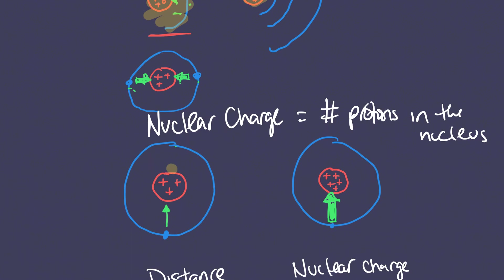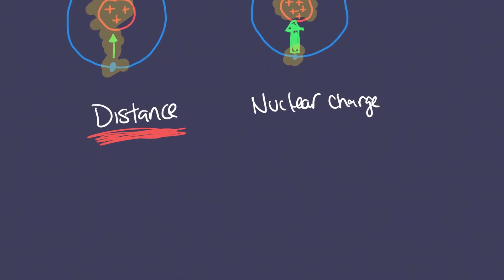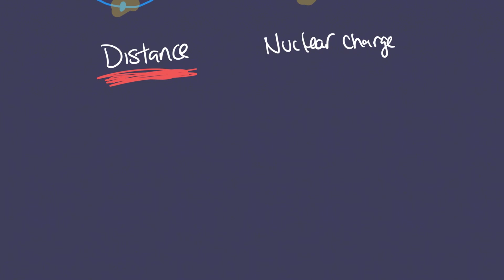Three protons in the nucleus have a relative pull on the electron, versus five protons which will have a much stronger pull. When we compare those two variables — distance and nuclear charge — distance has a greater change on the attraction forces. So if you're comparing two different elements where electrons are in different energy levels and the number of protons is different, most likely what's causing the big difference in Coulombic attraction is going to be distance.